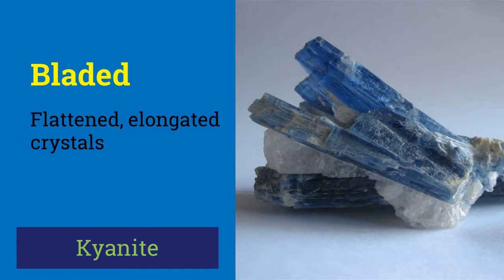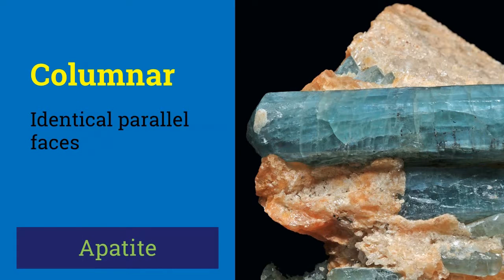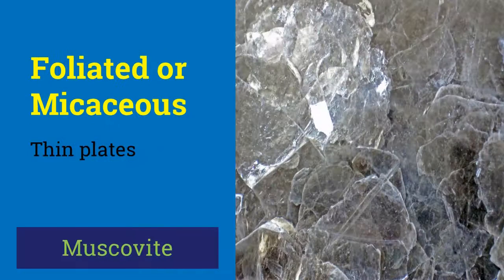When individual crystals or grains are flattened or elongated in one direction, as in kyanite and stibnite, the mineral has a bladed habit. However, when elongated crystals have identical faces parallel to a common direction, the habit is called columnar. Apatite and beryl have columnar habit. Minerals like mica which separate into thin plates easily have micaceous or foliated habit.